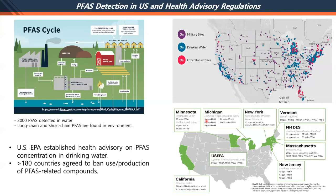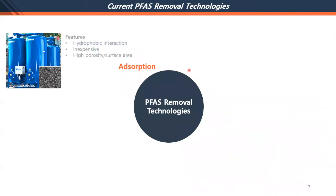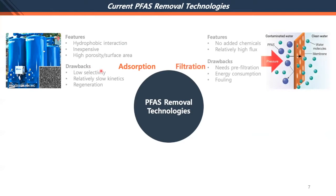Our idea is to first absorb and accumulate the PFAS, retain it, and then at a certain concentration, release it for characterization. Current PFAS technologies mostly focus on removing PFAS. One popular and effective approach is activated carbon absorption, based on hydrophobic-hydrophobic interaction and high porosity and surface area. This is relatively inexpensive, but less selective and has relatively slow kinetics.